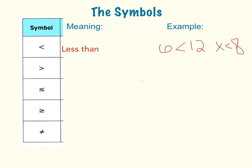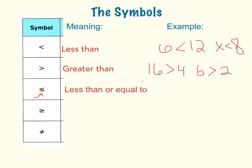The next one is the greater than symbol. I can use the example that 16 is greater than 4, or I can say that b is greater than 2. The next symbol is like the less than symbol, but it has a little line underneath. That line means equal to, so this is the less than or equal to symbol. I could say that 10 is less than or equal to 10.